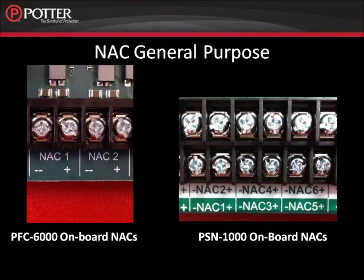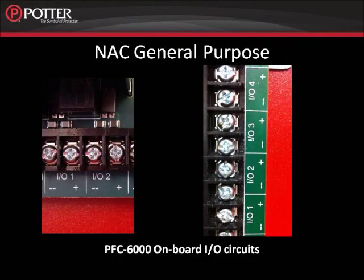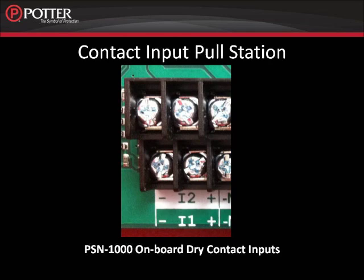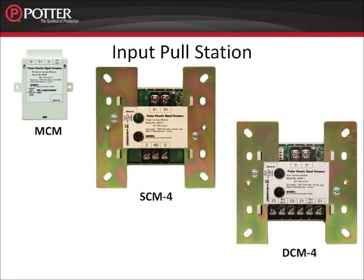The circuits labeled as NAC on the PFC 6000 series panels and the PSN 1000 power supply are initially configured as NAC general purpose. The circuits labeled as I-O on the PFC 6000 series panels are also initially configured as NAC general purpose. The two dry contact inputs on the PSN 1000 power supply are initially configured as input pull station. The MCM, SCM, and DCM are all configured as input pull station during the initial LEARN process.